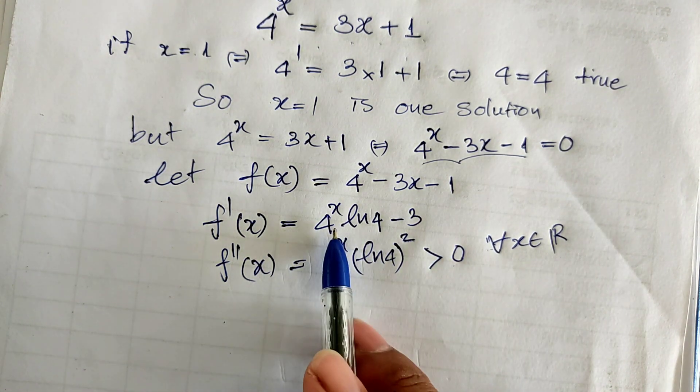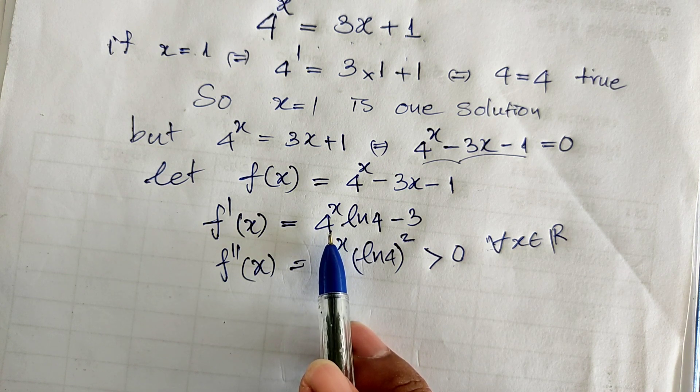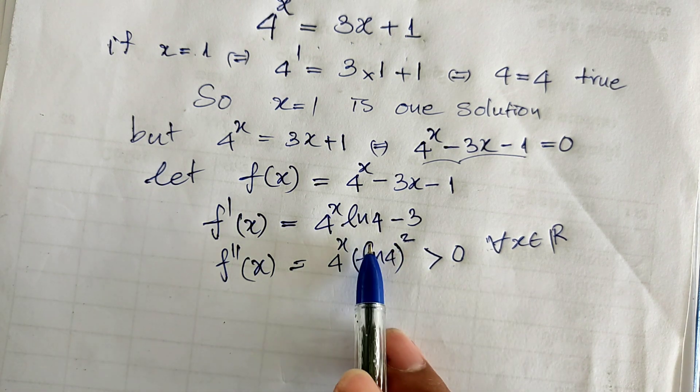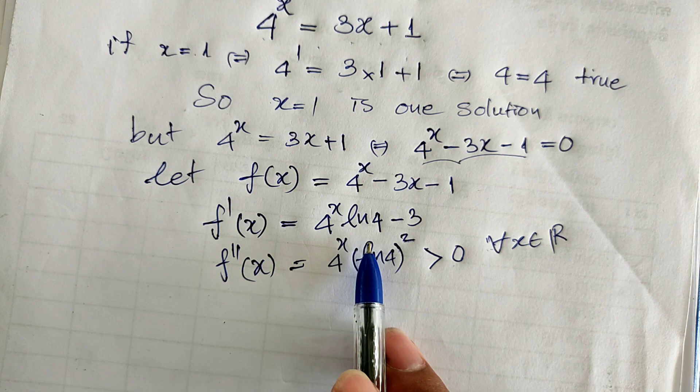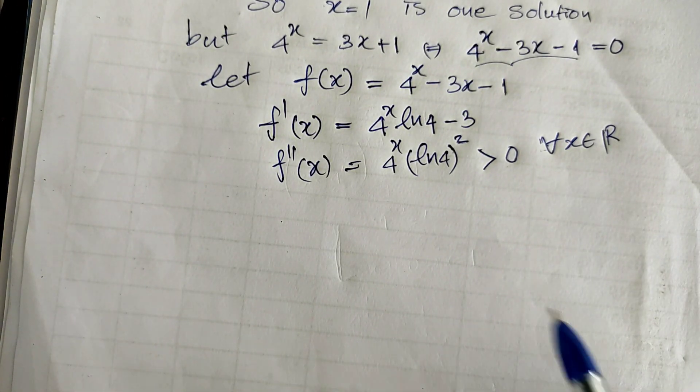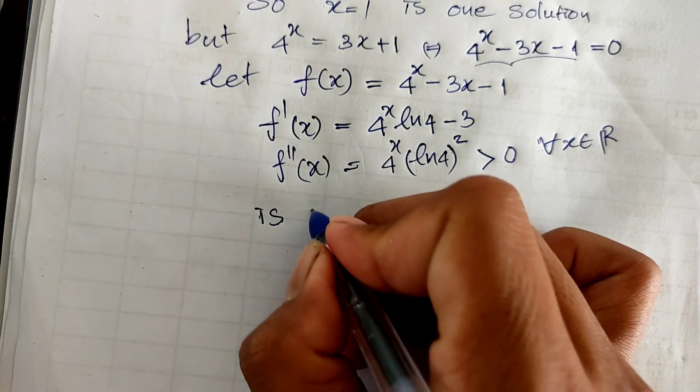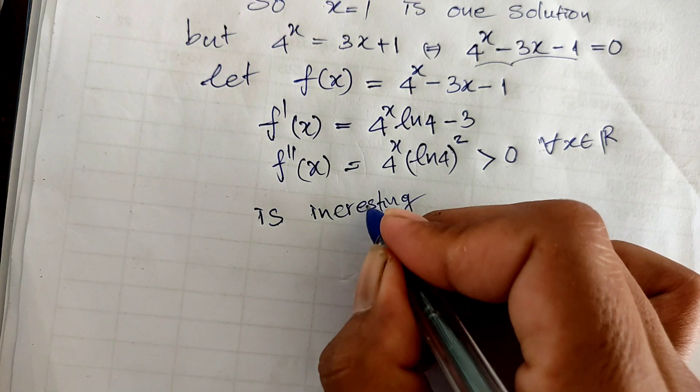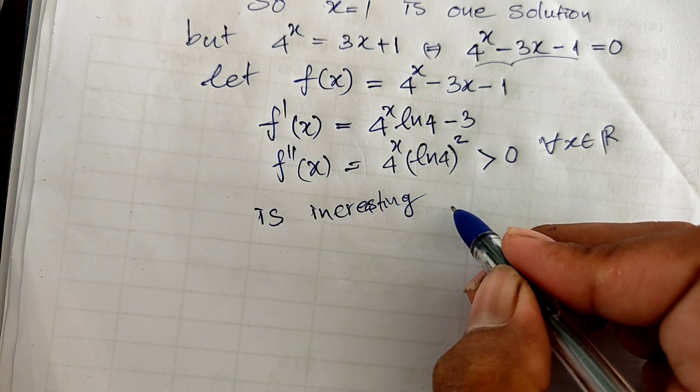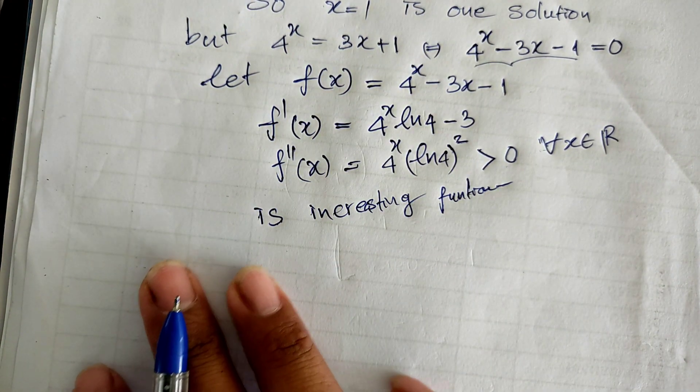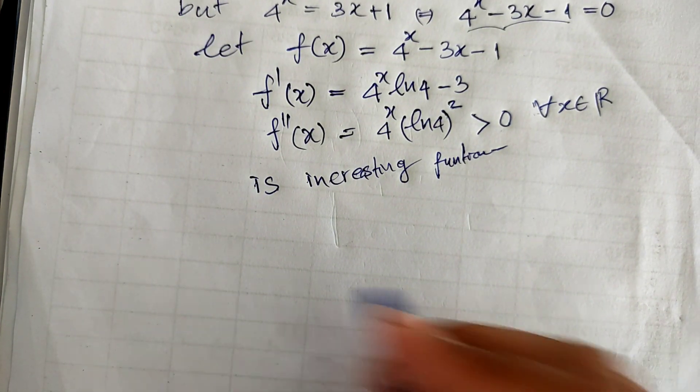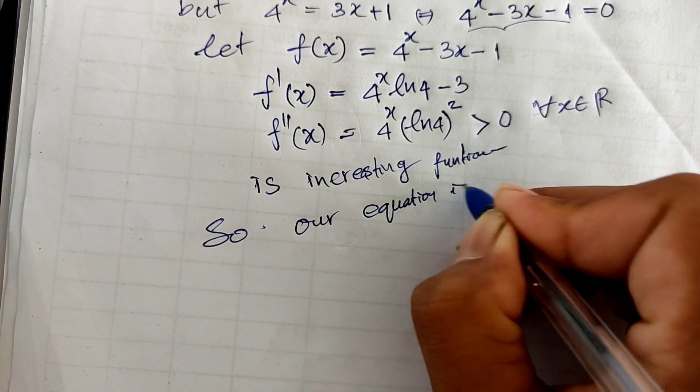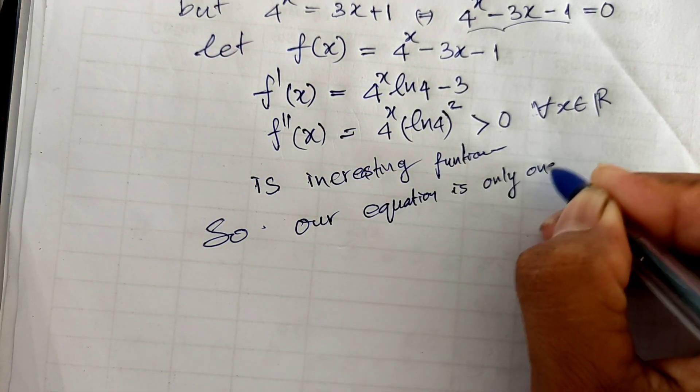So our equation is an increasing function. So that our equation that has an increasing function, it has only one root. So our equation has only one root.